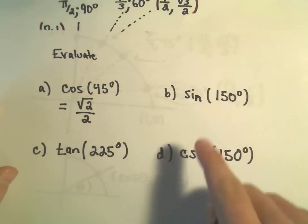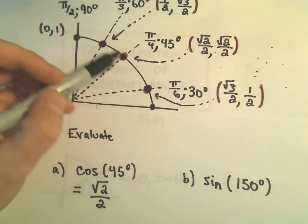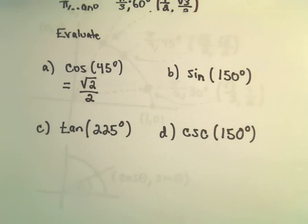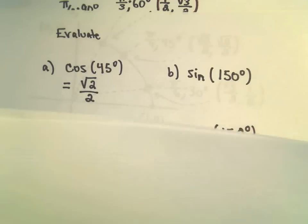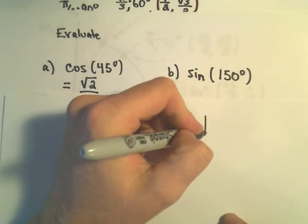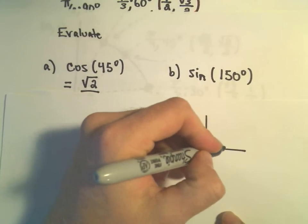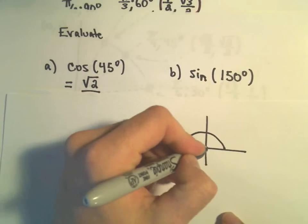Okay, sine of 150 degrees. Well, 150 degrees doesn't fall in the first quadrant. So this is where I'm going to have to think about reference angles a little bit. If we think about the angle 150 degrees, that would put us somewhere into the second quadrant.